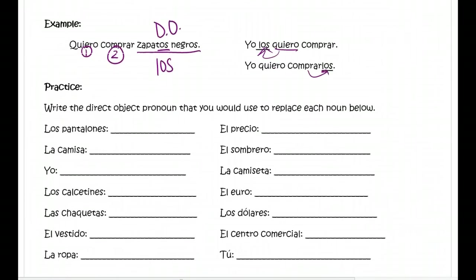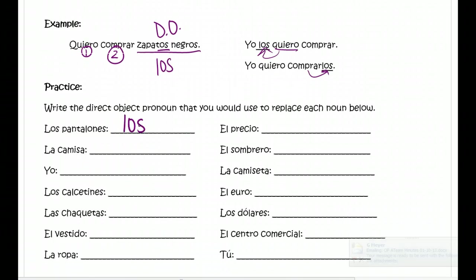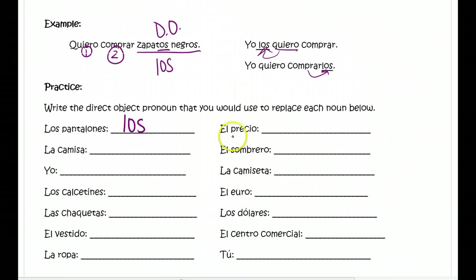We'll do a couple together. For example, los pantalones: we know that is plural and masculine — 'I want them, I want the pants' — we would replace this with 'los.' If we were talking about el precio — the price — this is singular and masculine, so we would replace it with 'lo.' All I want you to do for these words is write down which direct object pronoun you would use to replace them.